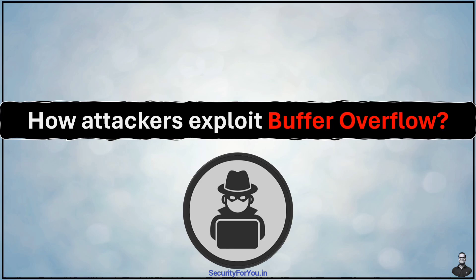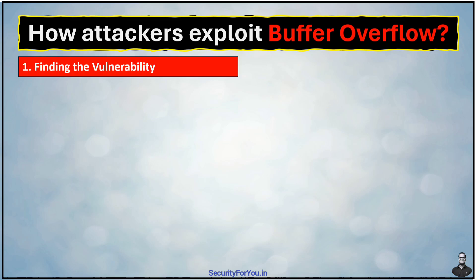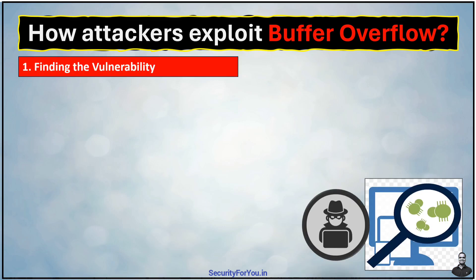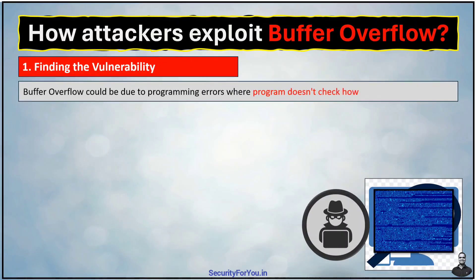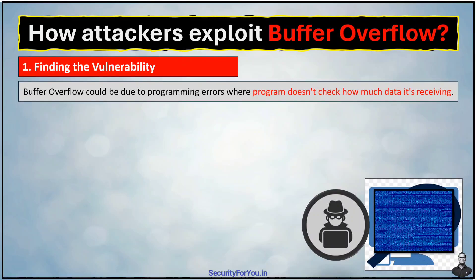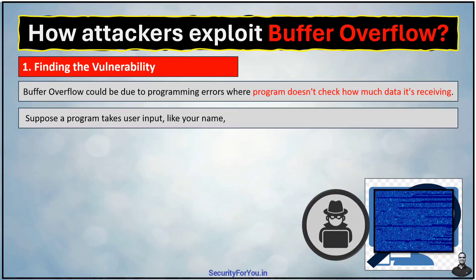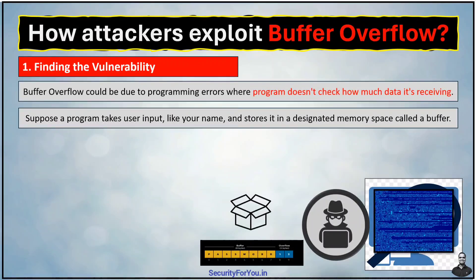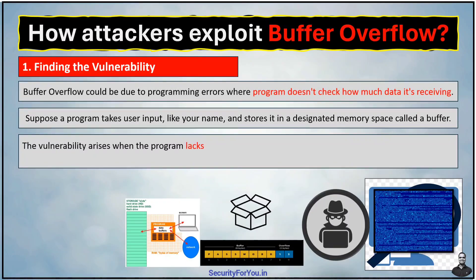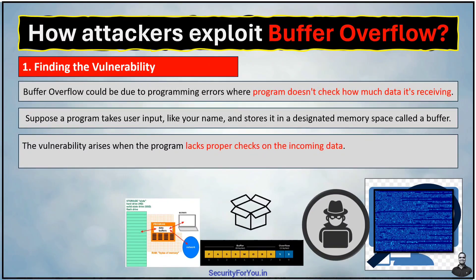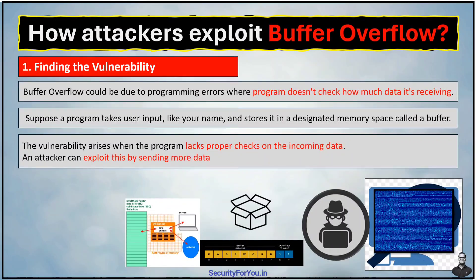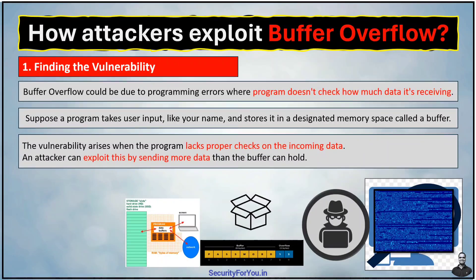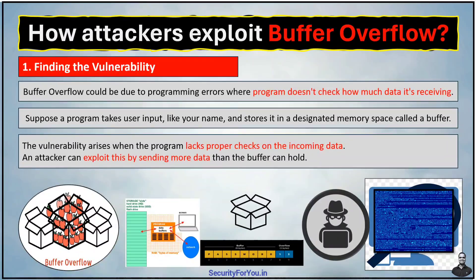Buffer overflow vulnerability — how attackers exploit this vulnerability. There are majorly four steps. The first is finding the vulnerability. Attackers identify a program with a buffer overflow vulnerability, which could be due to programming errors where the program doesn't check how much data it's receiving. Suppose a program takes user input like your name and stores it in a designated memory space called a buffer. This buffer has a fixed size like a box with limited space. The vulnerability arises when the program lacks proper checks on the incoming data, allowing an attacker to exploit this by sending more data than the buffer can hold.